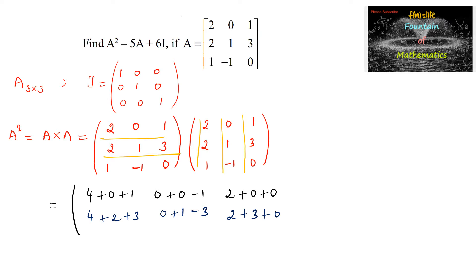Third row with first column: 1×2 + (−1)×2 + 0×1 = 2−2+0 = 0. Third row with second column: 1×0 + (−1)×1 + 0×(−1) = 0−1+0 = −1. Third row with third column: 1×1 + (−1)×3 + 0 = 1−3 = −2.